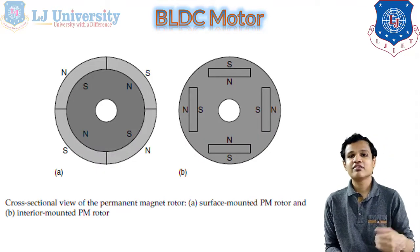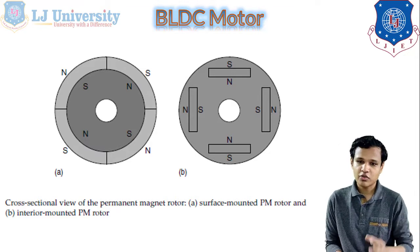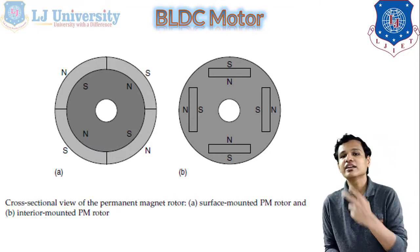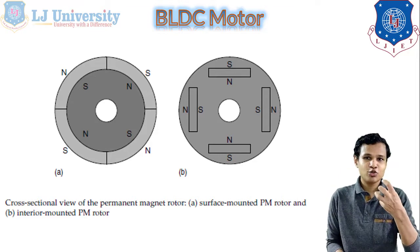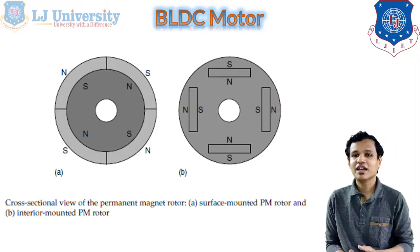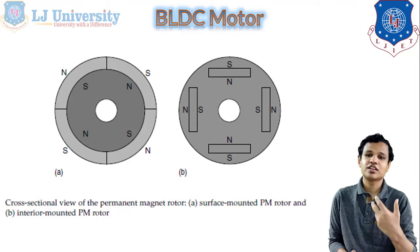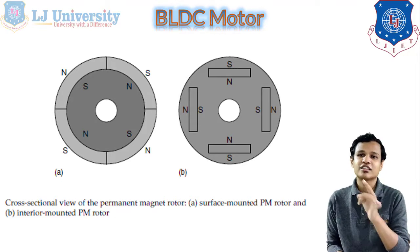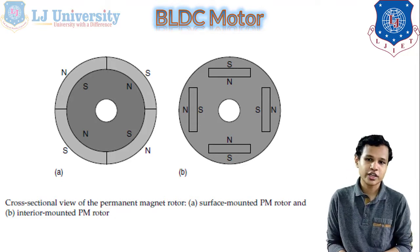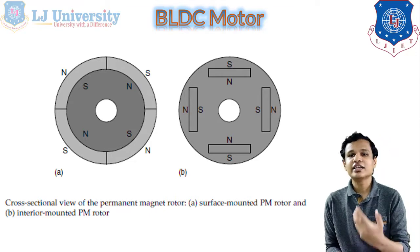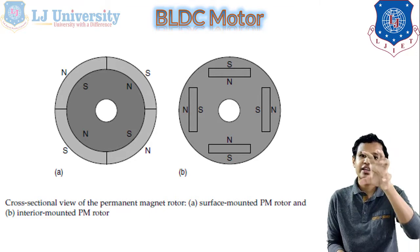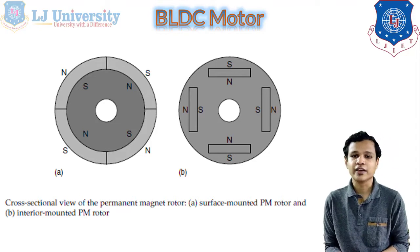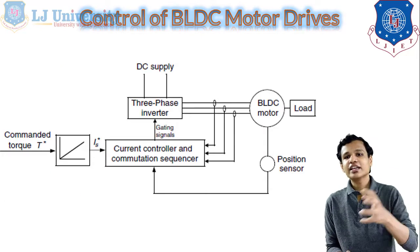There are two basic types of BLDC motor: the first is the surface mounted PM motor and the second is the interior mounted PM motor. In the surface mounted type, the permanent magnets are mounted on the outer surface of the rotor, whereas in the interior mounted type, the magnets are mounted inside the rotor, as can be clearly seen in the figure.